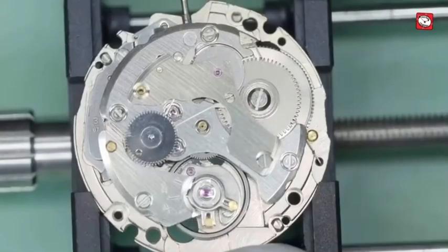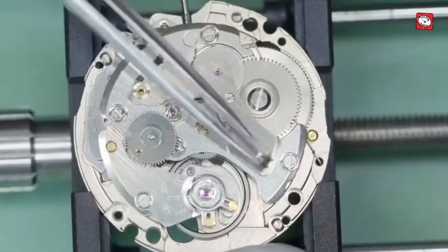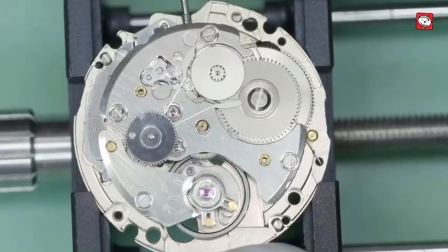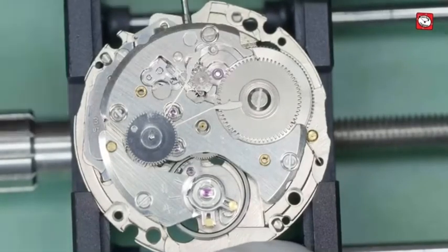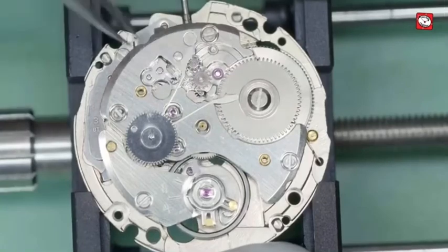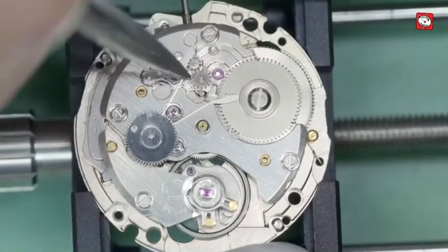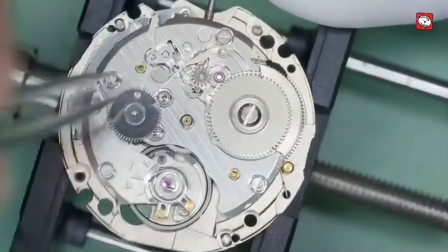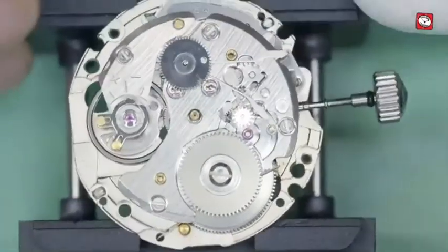This movement is strikingly similar to the Seiko 7S26 movement and so I was interested to see how the hacking feature worked. But here we can see the additional gearing which allows this module to be manually wound, something which the original Seiko movement lacks.